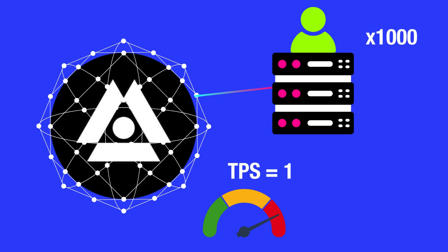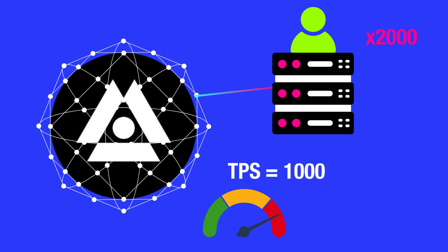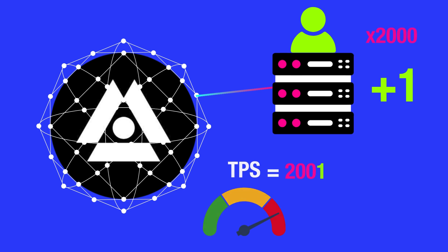If there's a total of 1,000 nodes active, then the transactions per second will be 1,000. If there's a total of 2,000 nodes active, then the transactions per second will be 2,000. Even adding a single node to the network would increase the TPS from 2,000 to 2,001.